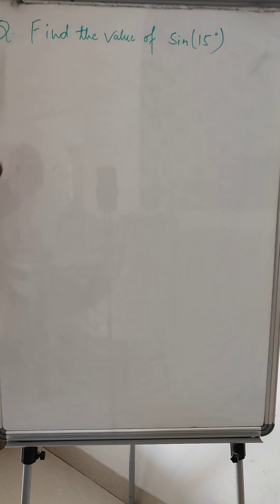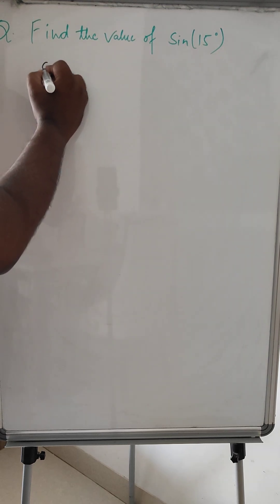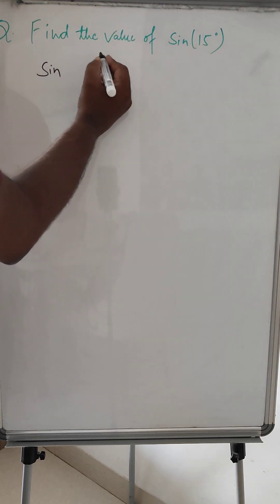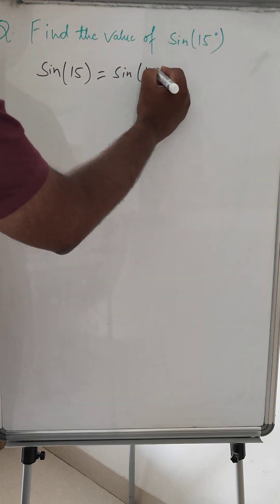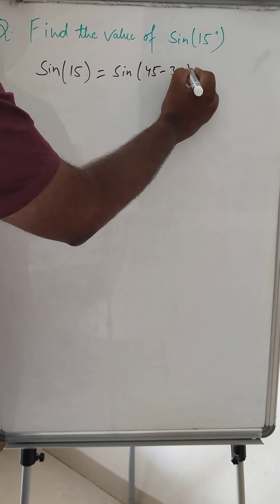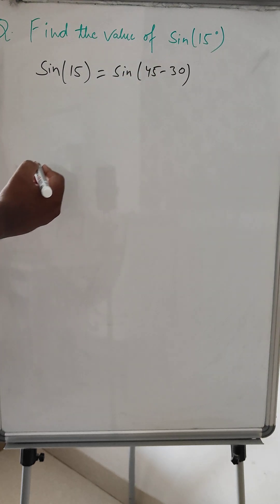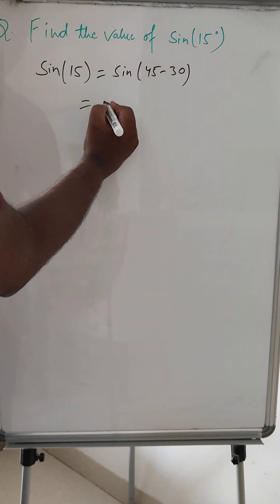Okay, let's start doing this. So sin 15, we can write this as sin(45 - 30). So we have to use the sin(A - B) formula here.